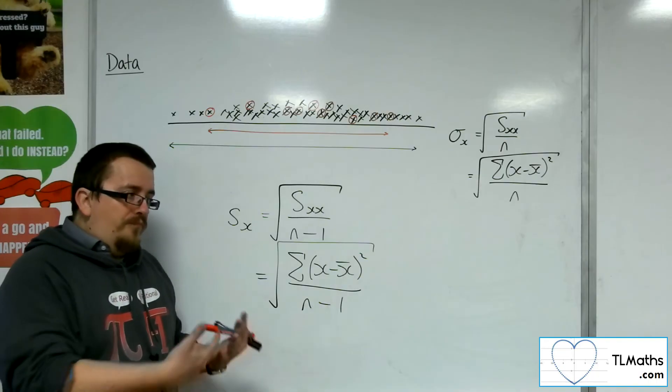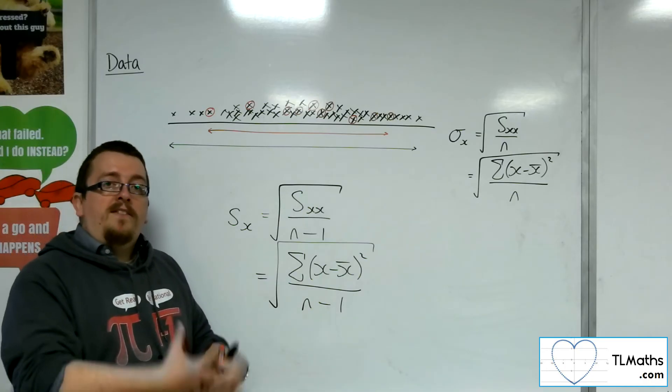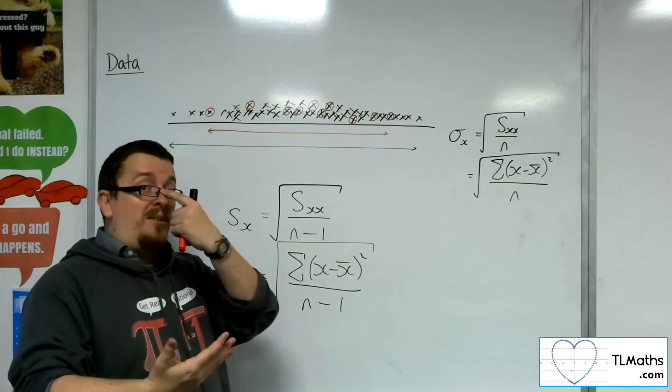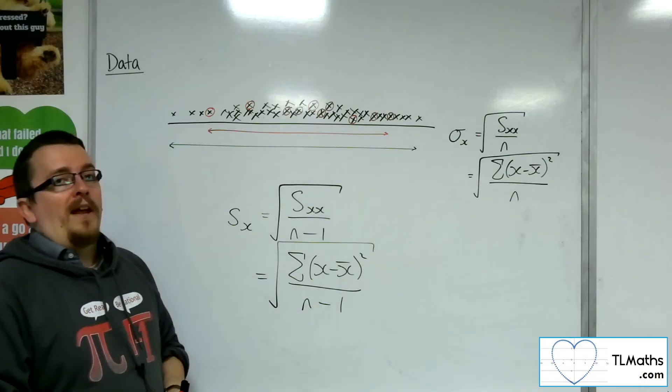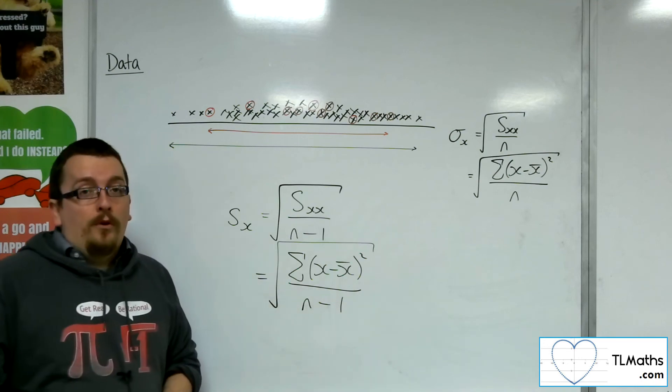So, it's just one of those things where it has been shown to give a better estimate of the population standard deviation than dividing by n minus 2 would.